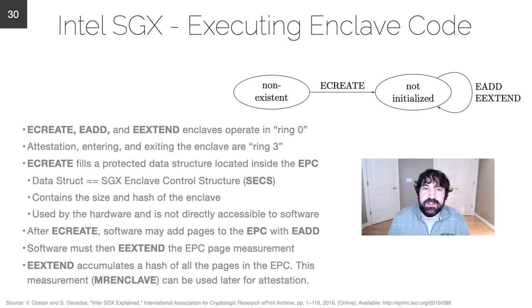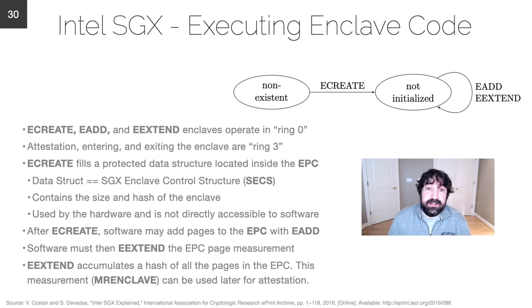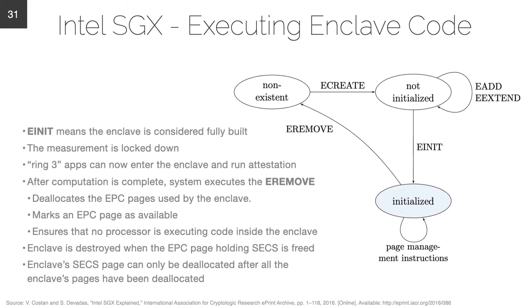Let's walk through the instructions used to create the secure enclave, fill it with code or data, and execute code inside it. The hardware commands ECREATE, EADD, and EEXTEND are used for creation of the enclave, adding pages to the enclave page cache, and extending the enclave's measurement once pages are added. While not initialized the enclave is not yet secure, as it has not been attested to by hardware. As pages are added, EEXTEND extends a hash stored in a measurement called MrEnclave, which will be used later for attestation.